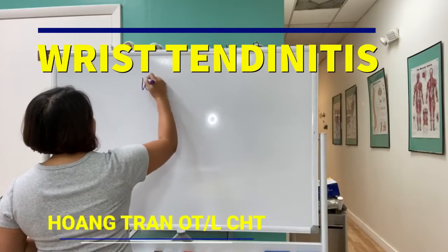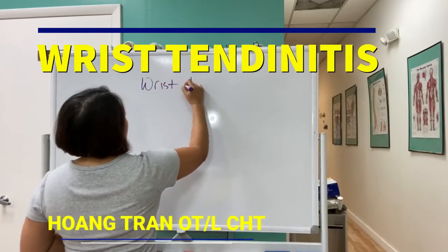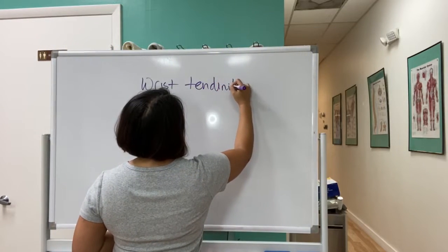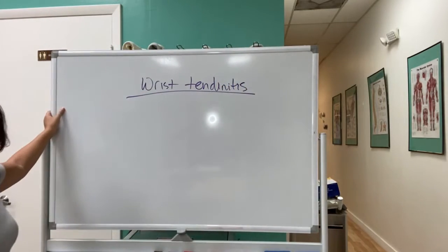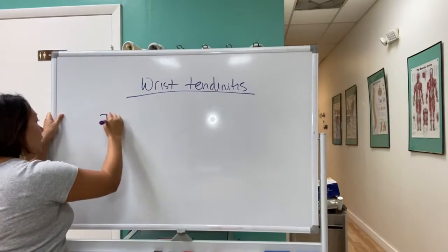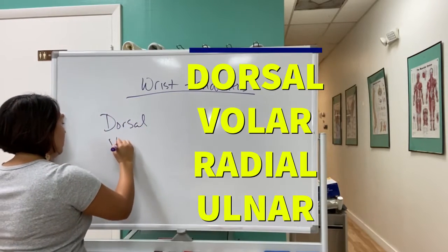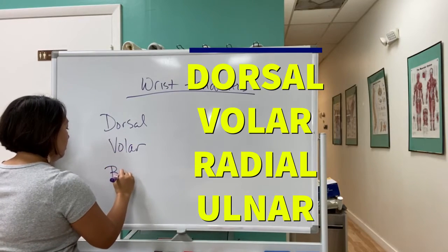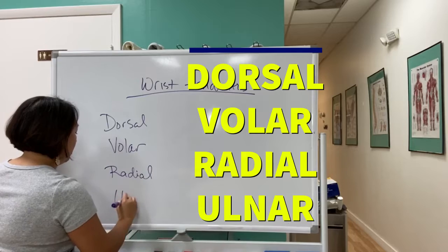We say wrist tendonitis — it's a vague terminology. Let's break it down into compartments: dorsal, volar, radial, and ulnar.